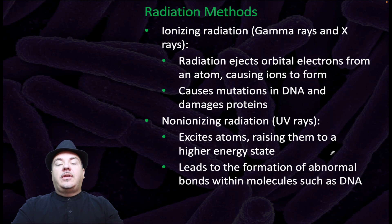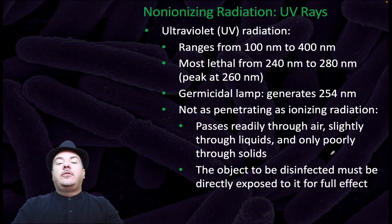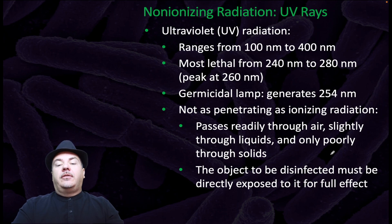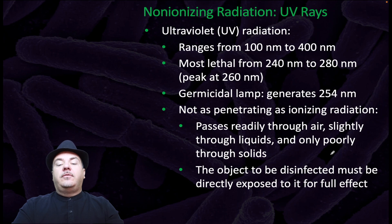Non-ionizing radiation, such as ultraviolet rays, excites atoms, raising them to a higher energy state. It leads to the formation of abnormal bonds within molecules such as DNA. Ultraviolet radiation ranges from 100 nanometers to 400 nanometers. It is most lethal from 240 to 280 nanometers and peaks at 260 nanometers. We use germicidal lamps that emit ultraviolet radiation at 254 nanometers. Ultraviolet radiation is not as penetrating as ionizing radiation — it passes readily through air, slightly through liquids, and only poorly through solids. The object to be disinfected must be directly exposed to the UV radiation for full effect.